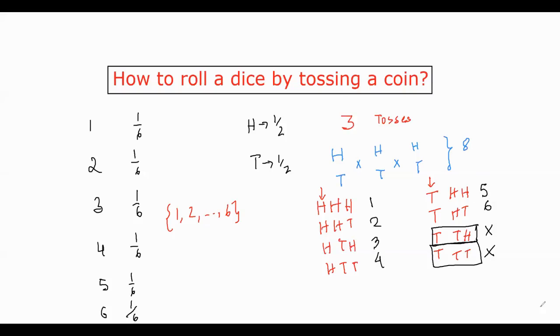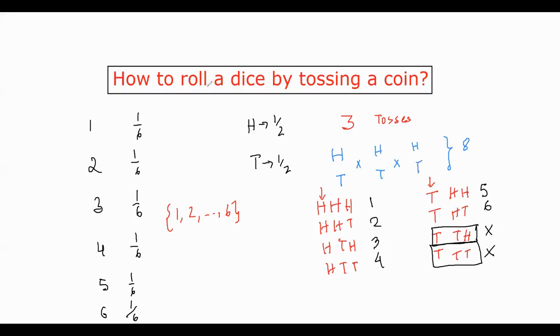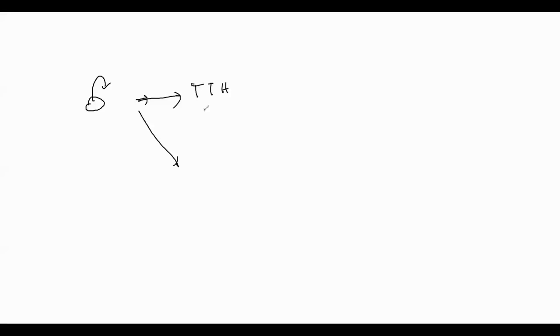So what is the experiment? The experiment is this. You toss a coin. And if you get the two options, if you get TTH, TTT, you reject it and you go back to this first step again. And if you get something else, you name it. If it's HHH, you name it 1.